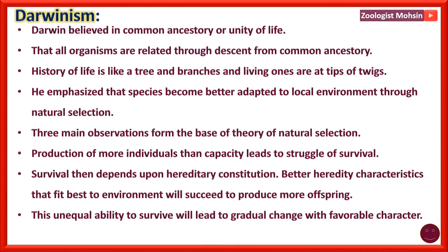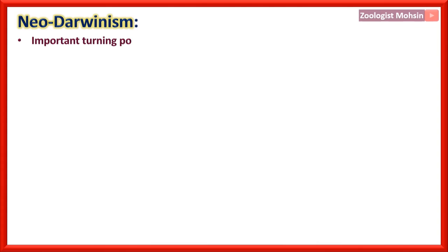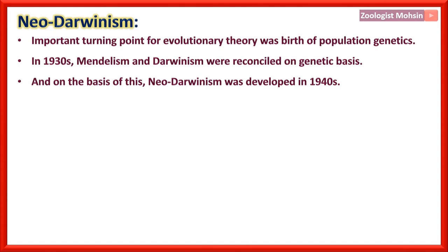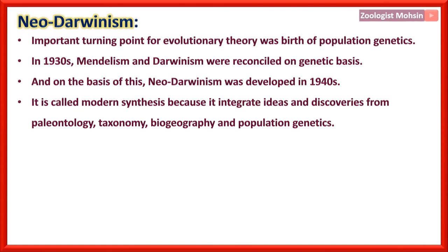Neo-Darwinism: An important turning point for evolutionary theory was the birth of population genetics. In the 1930s, Mendelism and Darwinism were reconciled on a genetic basis, and Neo-Darwinism was developed in the 1940s. It is called modern synthesis because it integrates ideas and discoveries from paleontology, taxonomy, biogeography, and population genetics.